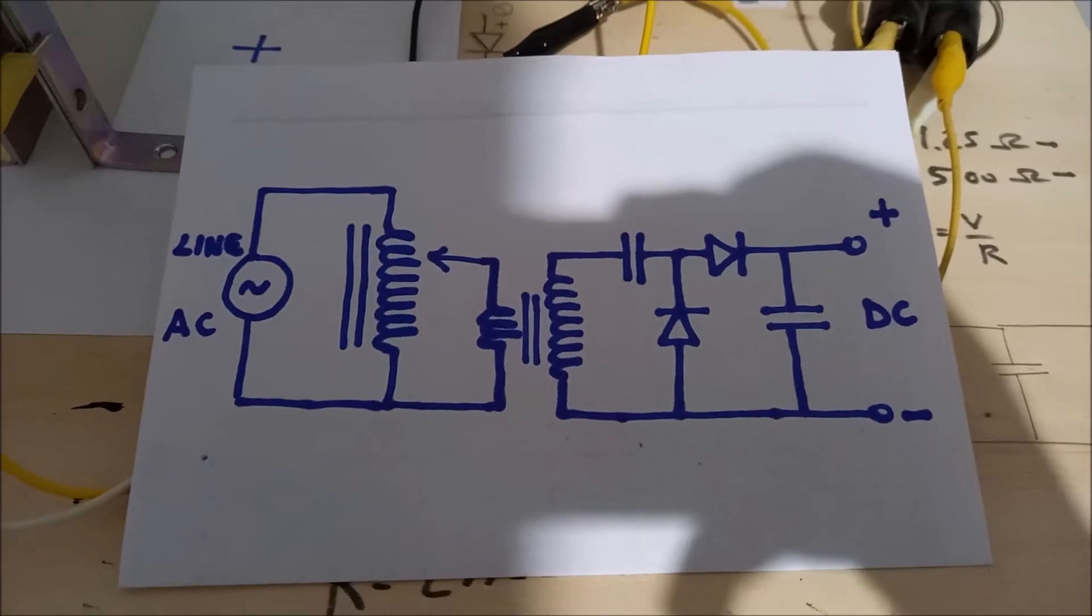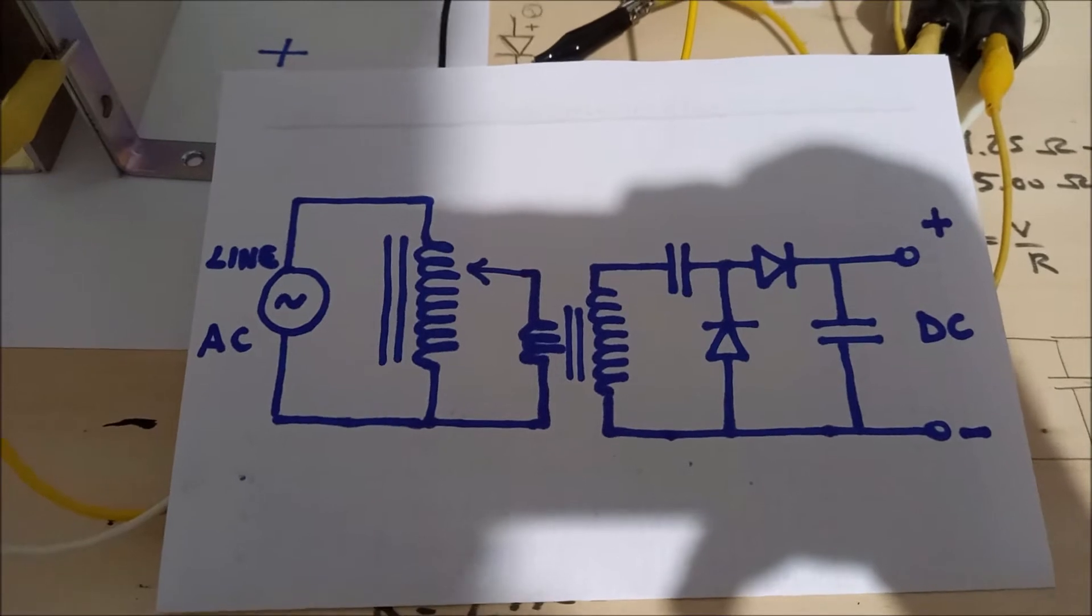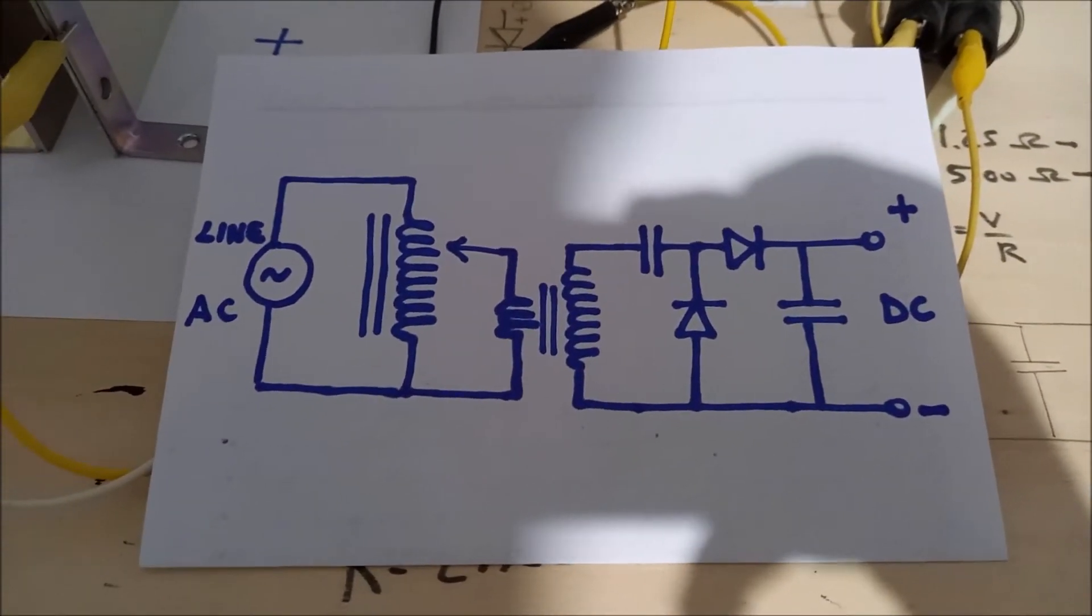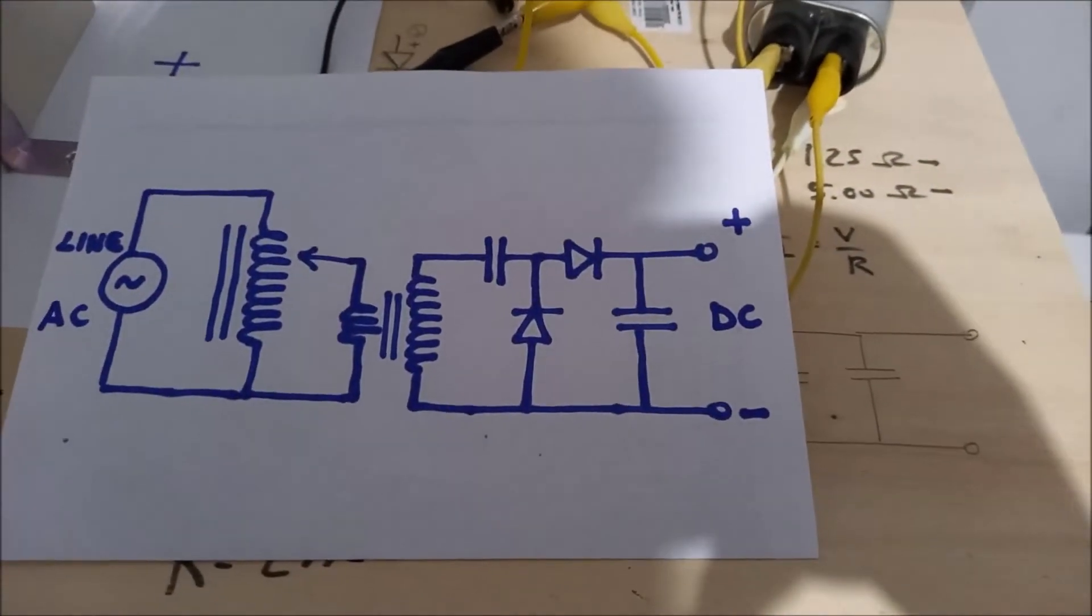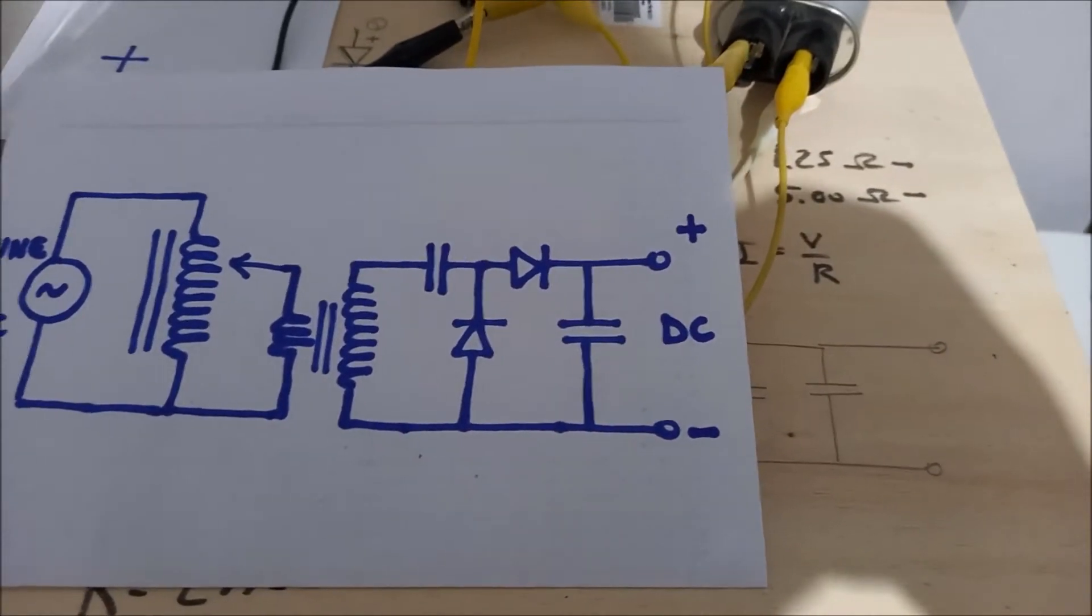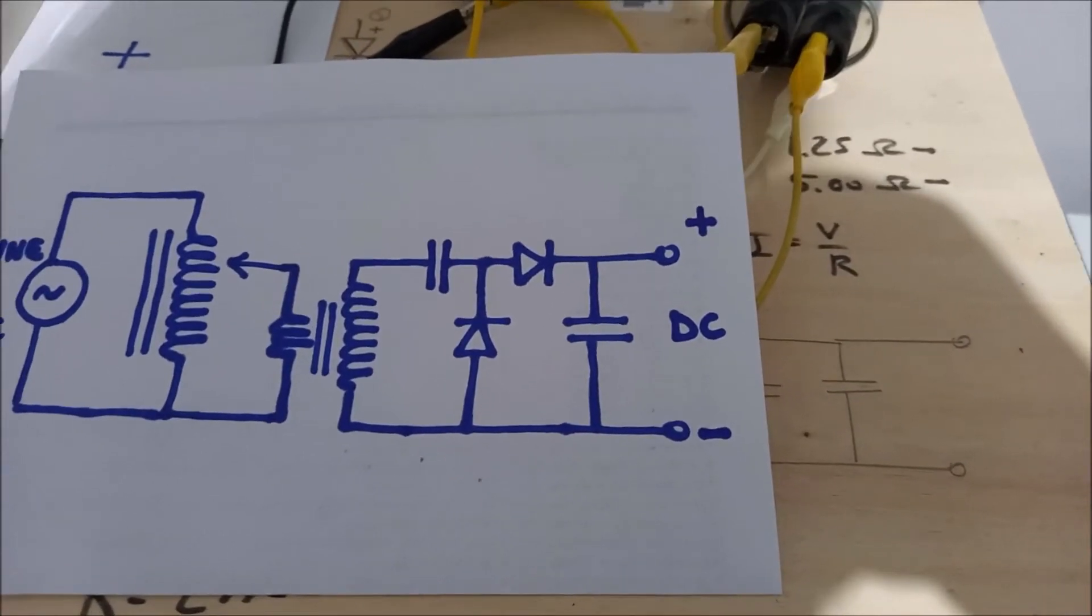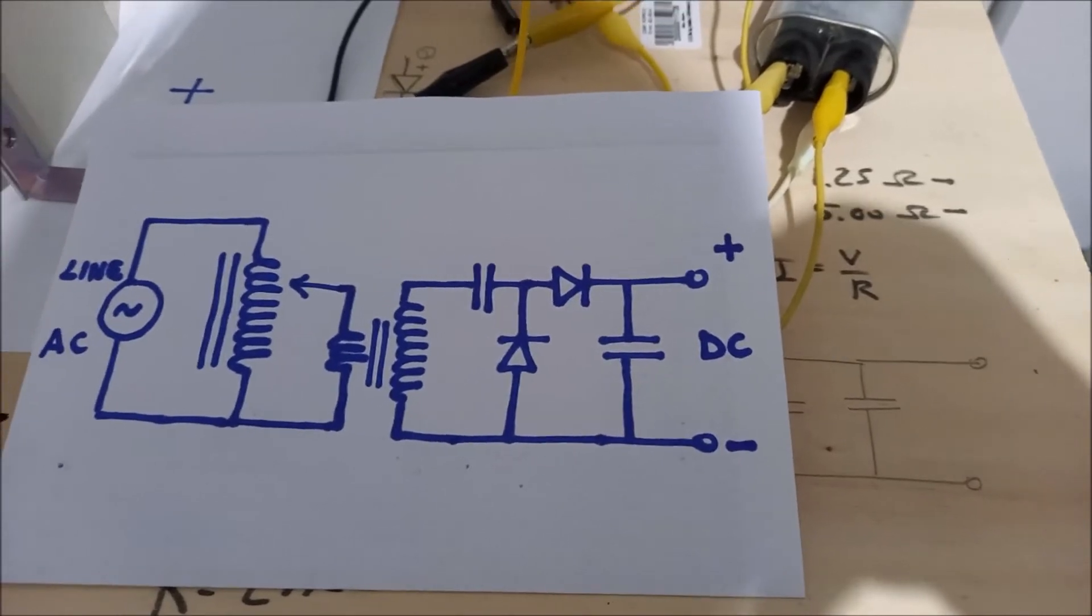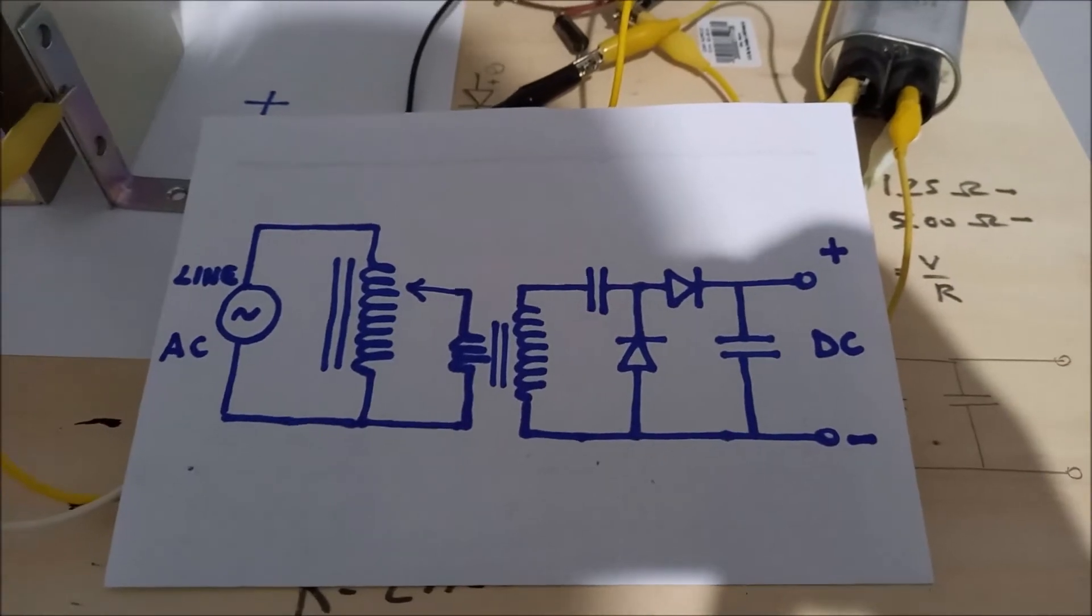The VARIAC actually allows me to vary the voltage from zero up to 300 volts root mean square. Then we have a microwave oven transformer that steps up the voltage by a factor of 10. Then we have this voltage doubler circuit that is going to help in doubling the voltage and also converting from AC into DC. The DC voltage is fed into a capacitor.